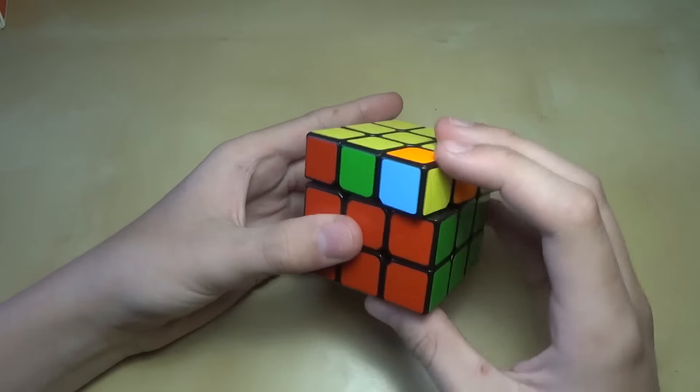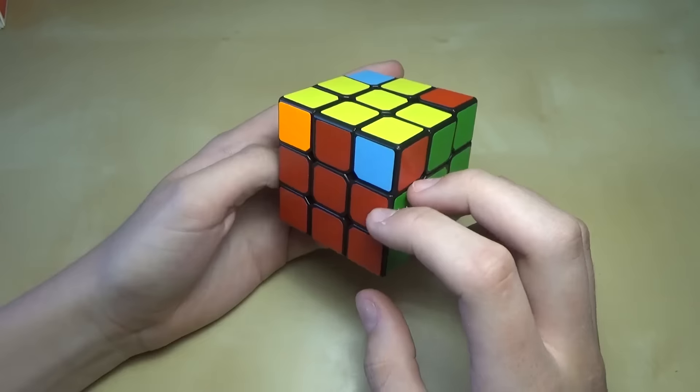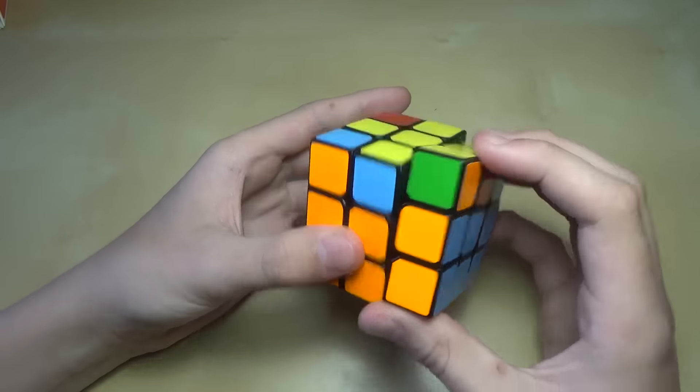Now if no corners are permuted, do u, r, u', l', u, r', u', u', l. Then position a permuted corner on the right, and do the algorithm again.